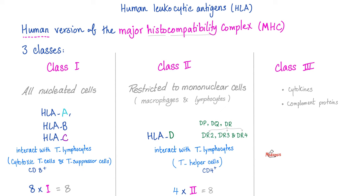Pause and digest. Class 1 MHC is divided into three HLAs in humans: HLA-A, B, and C. HLA-D belongs to class 2 MHC. HLA-D is subdivided — like an EKG — into DP, DQ, and DR. The DR is further subdivided into DR2, DR3, and DR4.